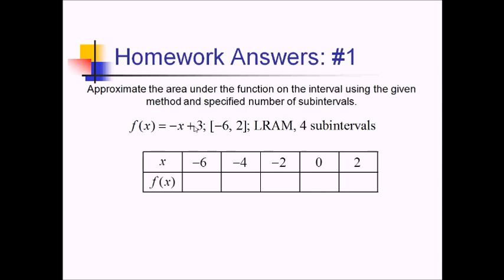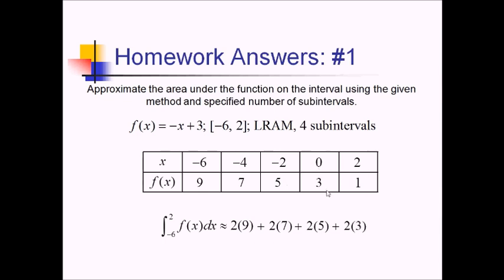So this is going to be 6 plus 3, so 9. This is going to be 4 plus 3 is 7. Then we've got 2 plus 3 is 5. This is 0 plus 3. This is negative 2 plus 3. Since I'm using LRAM now, to approximate the integral from negative 6 to 2 of this f of x, I've got to start with 2 times 9. That's the left endpoint of my first rectangle. Then I've got a base of 2 times the height of 7, the left endpoint of my second rectangle. Base of 2 times 5, plus a base of 2 times 3. Adding all that up, I've got 18 plus 14, so 32 plus 10 is 42, plus 6 is 48.